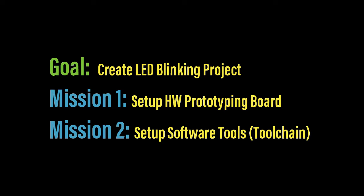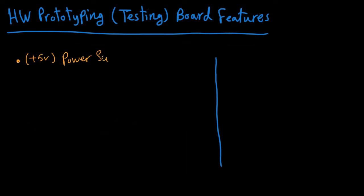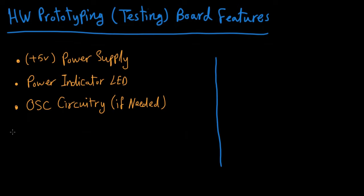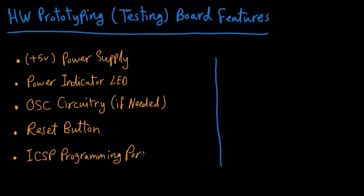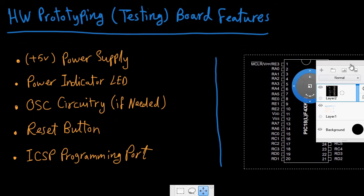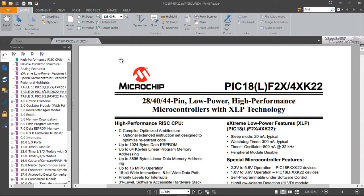Our mission is to get the hardware ready and the software tools installed. The prototyping board should have: a 5V power supply, a power indicator LED, oscillator circuitry if needed — though most microcontrollers today have an internal oscillator — a reset button to restart the microcontroller, and an ICSP programming port to flash code easily. Let's now open the datasheet for this microcontroller to see its features and pinout.